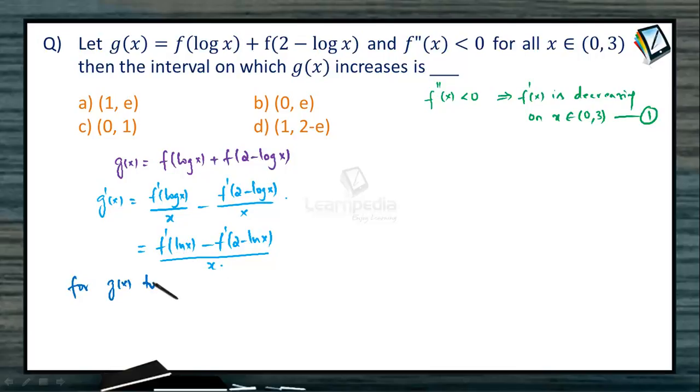For g(x) to increase, we need g'(x) to be positive. As the denominator is always positive, the derivative will be positive only if f'(ln x) > f'(2 - ln x).